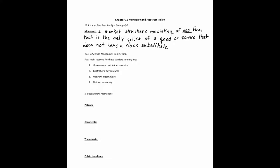Monopoly exists on the opposite side of the competition spectrum compared to perfect competition. We're studying it for two reasons: some firms are truly monopolists, so it's important to understand how they behave, and another situation is one in which firms may collude to act like a monopolist.